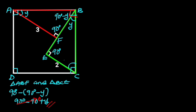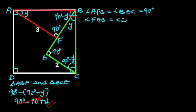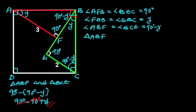Also, angle BCE will be 90 degrees minus Y. Reason: the sum of angles in a triangle is 180 degrees. From triangle ABF and triangle BCE, we can see that angle AFB is equal to angle BEC, that is 90 degrees. Angle FAB is equal to angle BCE, that is 90 minus Y.